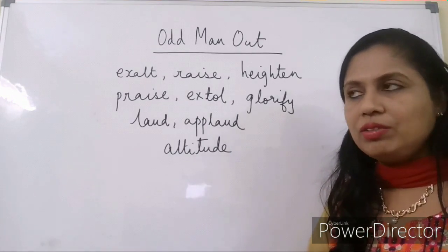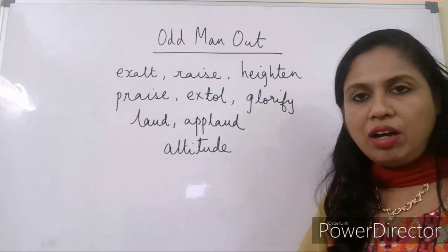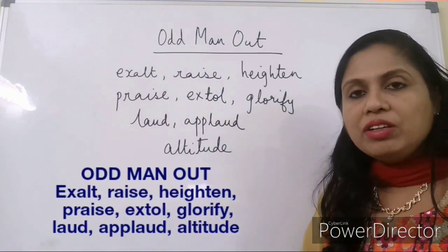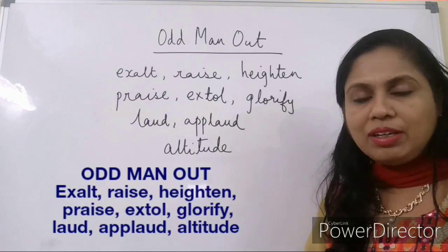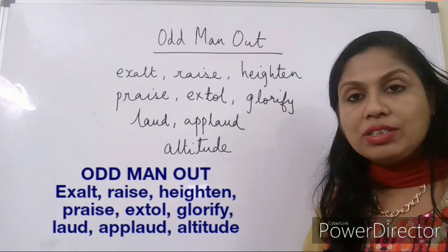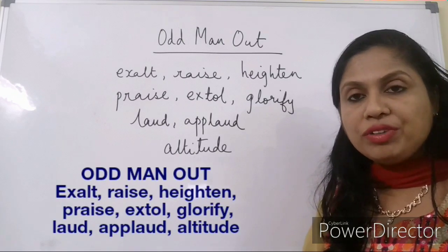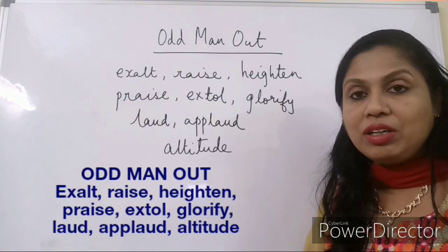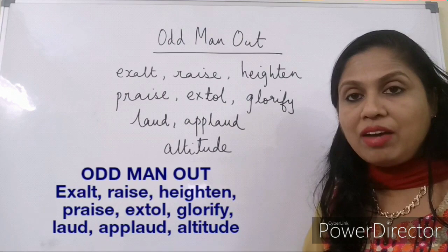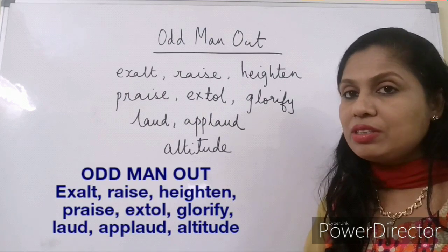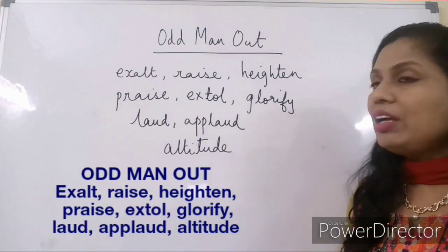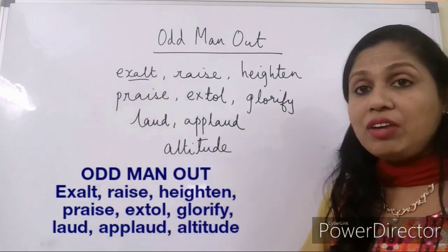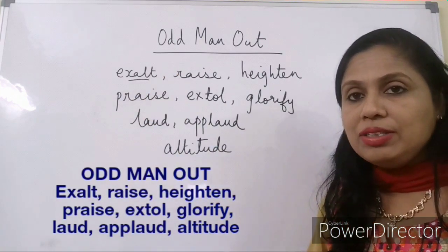Let's answer a question: find the odd man out. When we answer an odd man out question, there should be something which is common or similar in all the words except for one. It is not necessary that all words with a similarity have to be synonyms. The word exalt, as we have just studied, means praise.